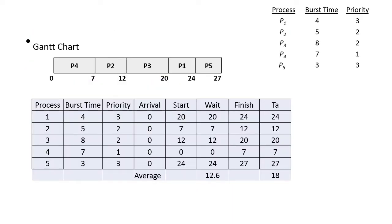For this given problem, first we try to draw the Gantt chart. P4 has the highest priority, so P4 will execute first, starting at time 0. The burst time is 7, so 0 plus 7 equals 7. Since there is no arrival time given, we assume the arrival time of all processes is 0. We need to compute start time, wait time, finish time, and turnaround time, and finally the average waiting time and average turnaround time for all the processes.